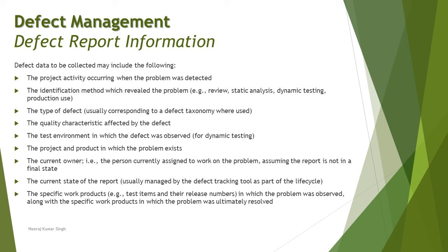The specific work product in which the problem was observed should be recorded, alongside where the defect was introduced, and the work product in which it was ultimately resolved. This can drill down further — for example, an RTM might help identify an issue, or in static testing which type of review was conducted, or in dynamic testing what level was involved. For non-functional testing such as performance, sub-levels like stress testing, load testing, or volume testing can also be classified.